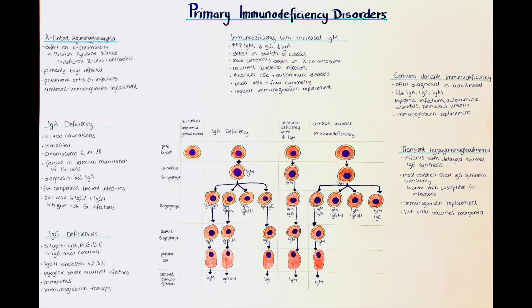The next disease is called immunodeficiency with increased IgM, also called immunodeficiency with hyper-IgM. This is a disease in which patients have excess amounts of IgM antibodies; however, they are deficient in IgG and IgA antibodies.